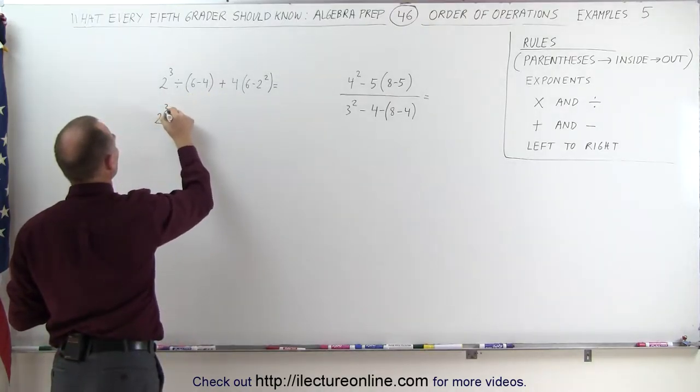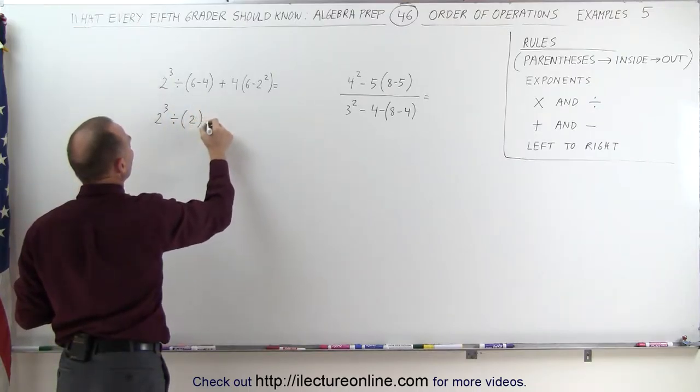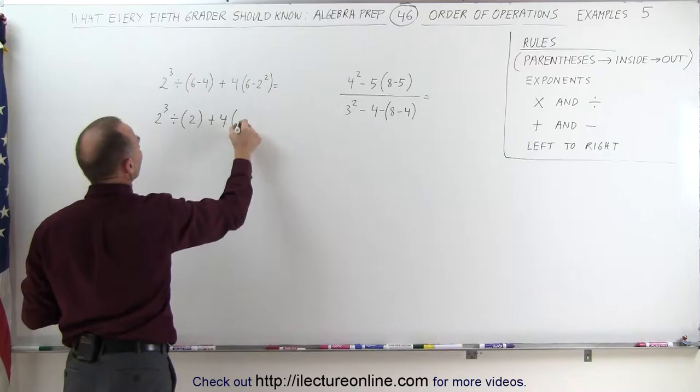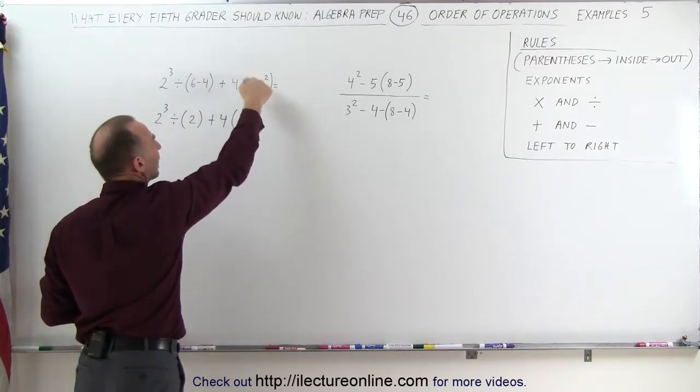We get 2 cubed divided by 6 minus 4 is 2 plus 4 times 6 minus, because before we can subtract we have to do the exponent first.